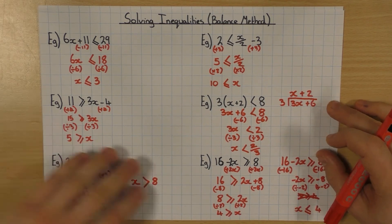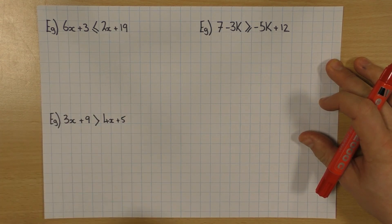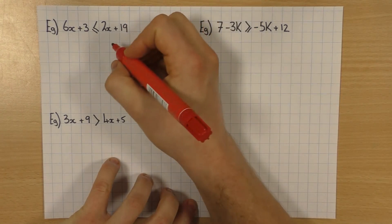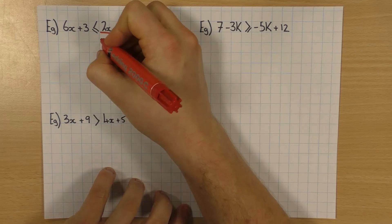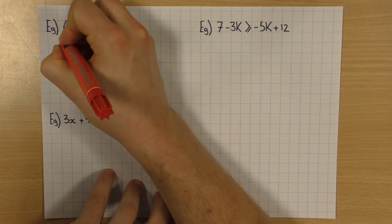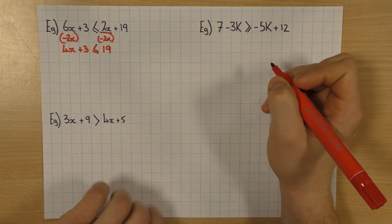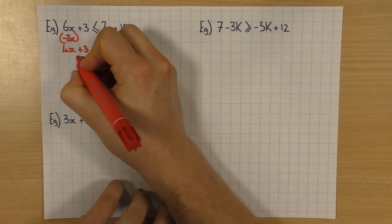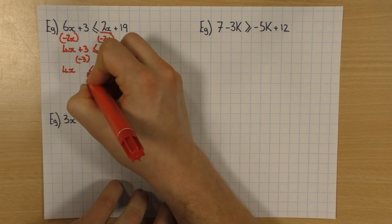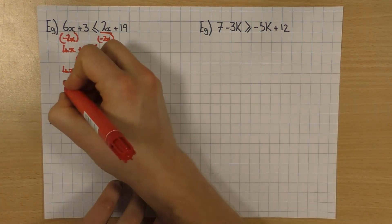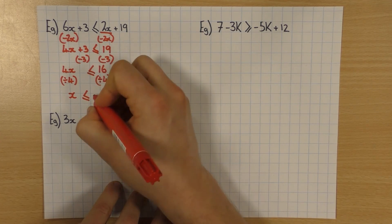So let's go on to some slightly trickier questions. In these ones I've got variables on both sides. But again, the method is exactly the same as if we were solving equations. First thing I'm going to do is look and see which one is the smaller. I've got 6x and 2x — clearly 2x is the smaller one, so that's the one I'm going to get rid of. So I'm going to minus 2x from both sides, which leaves me with 4x plus 3, inequality sign stays the same, and then 19. Then let's get rid of that 3 by doing the opposite and taking 3 away from both sides. So I've got 4x, inequality sign stays the same, 19 take away 3 is 16. Then I'll divide both sides by 4, and x, inequality sign stays the same, 16 divided by 4 is 4. And you're done.